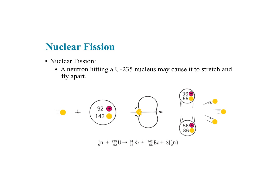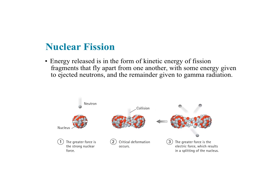Nuclear fission represents the splitting of an atom. In our example we have uranium-235, which has an atomic number of 92 and an atomic mass of 235. A high energy neutron comes in and strikes the nucleus of this atom, and the atom splits into krypton and barium, and then three neutrons are shot out. So one neutron comes in, strikes the uranium atom, and it transmutes that uranium into krypton and barium, with additional neutrons flying off.